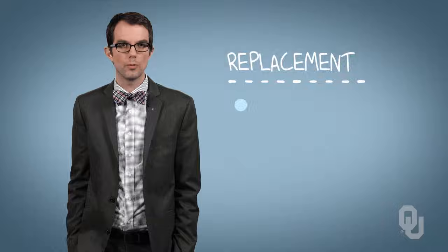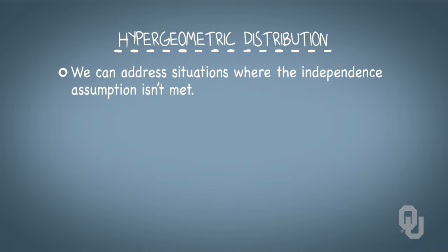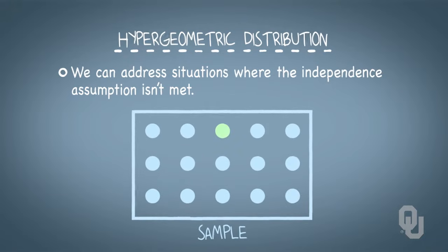With the next distribution that we're going to discuss, the hypergeometric distribution, we address situations where the independence assumption isn't met. That is, if we view a success in an observation, then we have one fewer successes that we can view in the remaining sample.